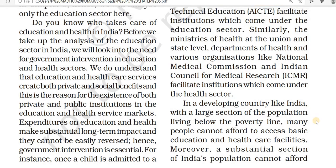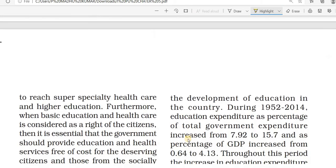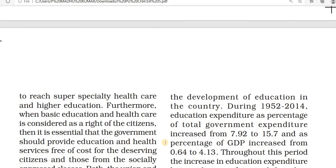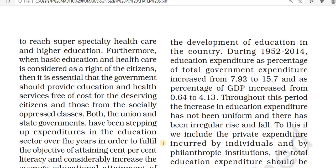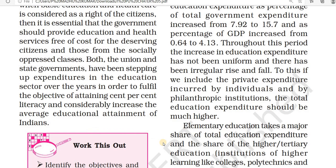In a developing country like India with a large population, most people are in poverty, so they need more healthcare and educational facilities. The government needs to provide more facilities like super-specialty hospitals and free higher education, as well as basic free healthcare. If facilities are free, students and citizens will use them more. The government provides free compulsory education up to the age of 14 years.